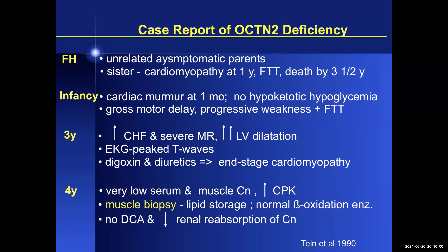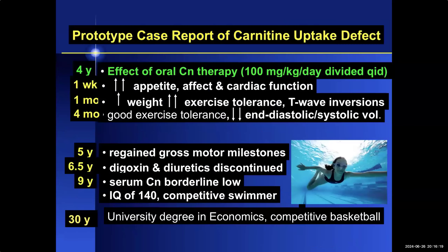At four years of age she was found to have very low serum and muscle carnitine with elevated CPK and a muscle biopsy showing microvesicular lipid storage with normal beta-oxidation enzymes and no dicarboxylic aciduria. She had markedly decreased renal reabsorption of carnitine, consistent with a transporter defect. She was clinically diagnosed with a carnitine uptake defect and started on high-dose oral L-carnitine at 100 mg per kg per day divided QID. In the first week, her father noted a marked improvement in appetite and affect — as if a light bulb had been turned on.